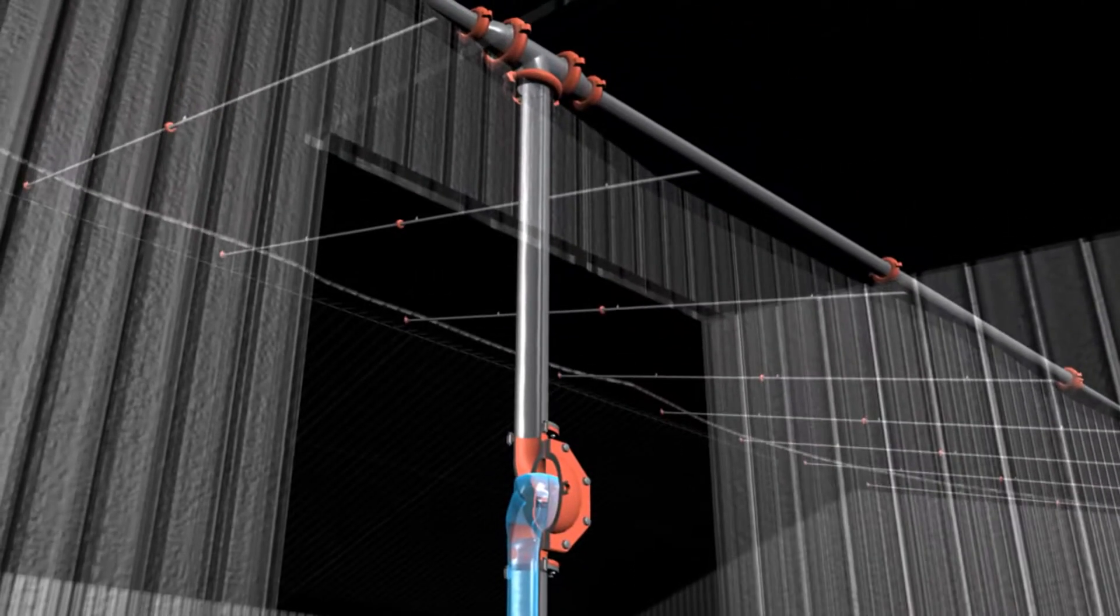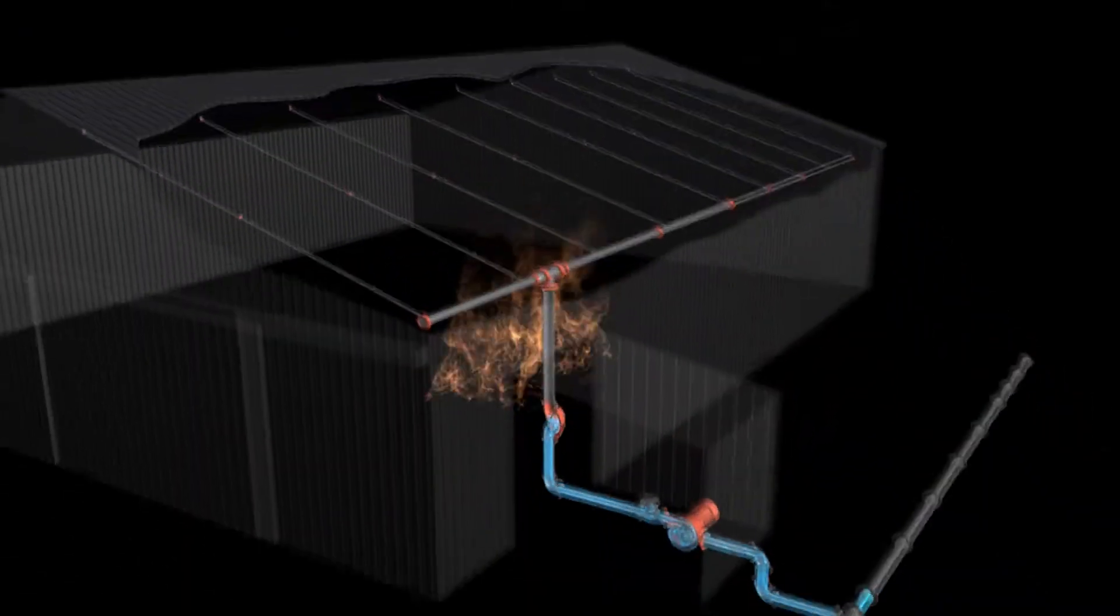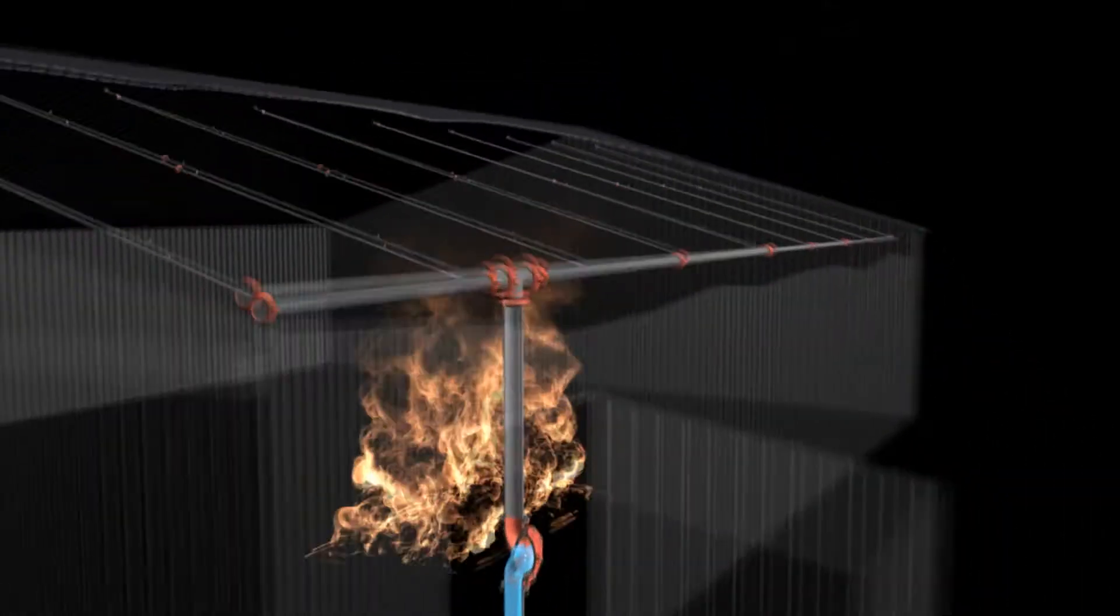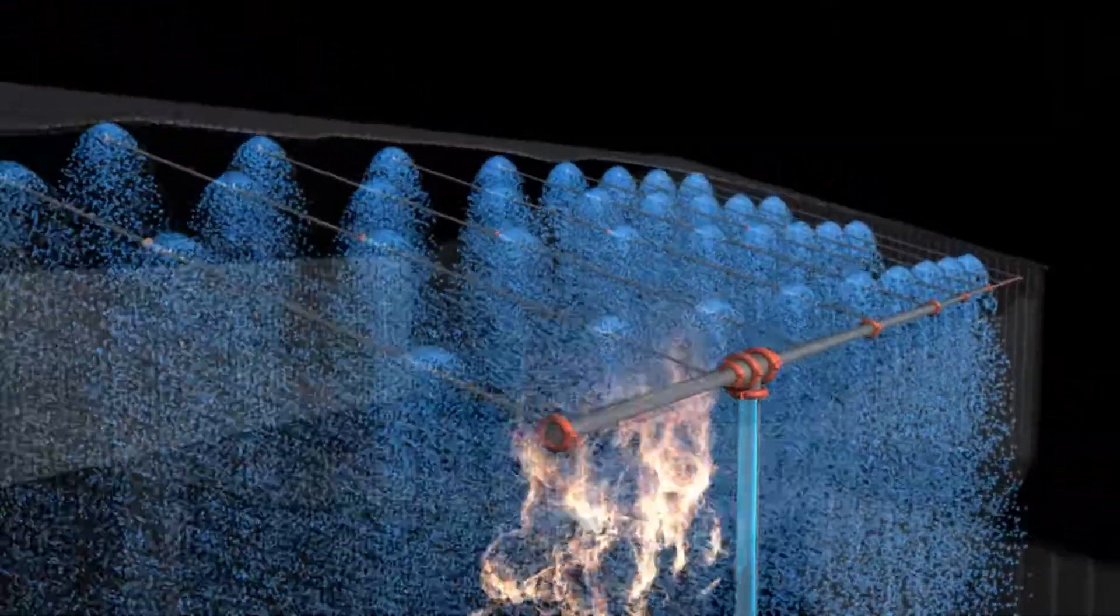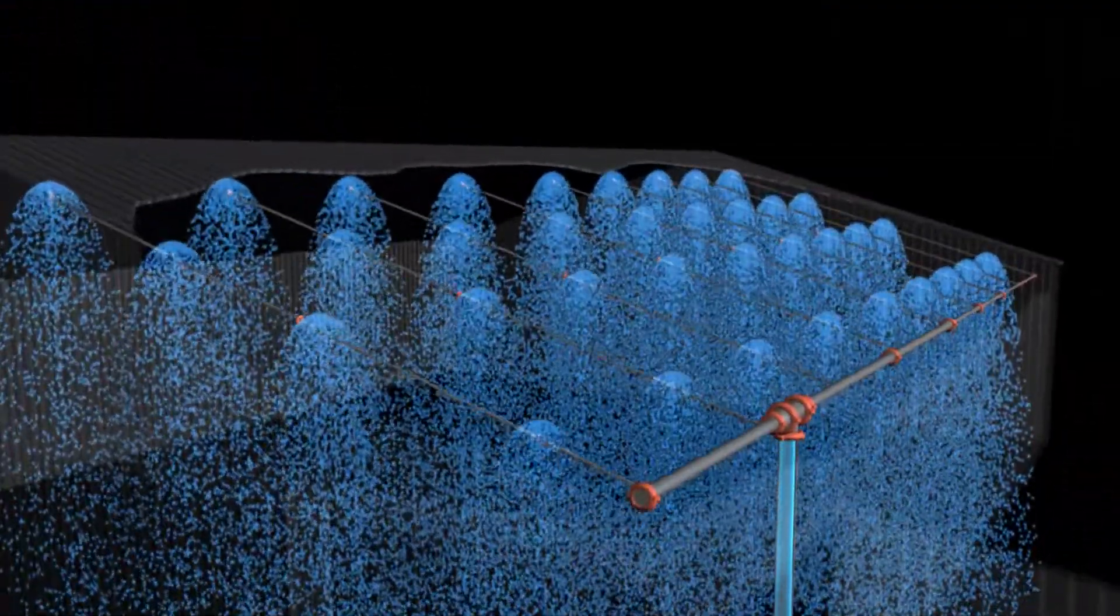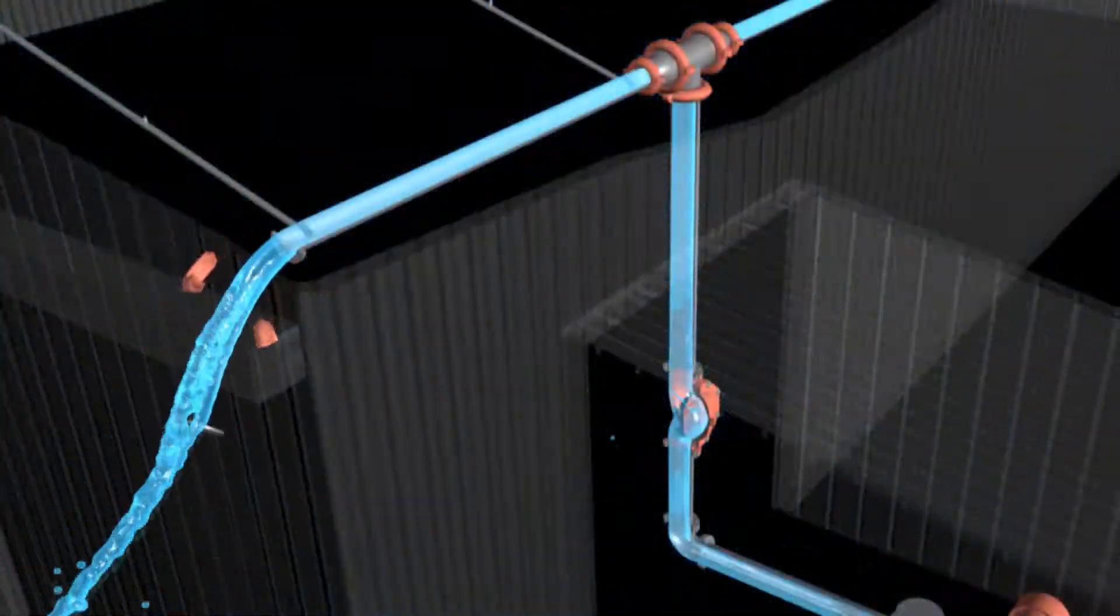When a fire occurs, the deluge valve opens and water is supplied to the heads under water main pressure. The sudden opening of the deluge valve can create a surge condition that can cause a sprinkler head or fitting to fail.